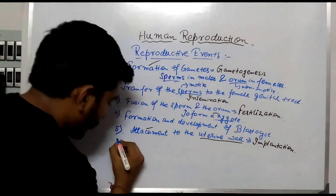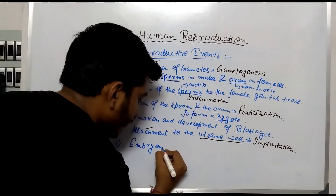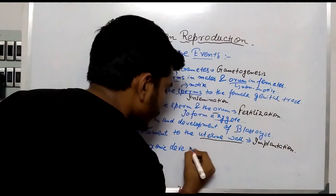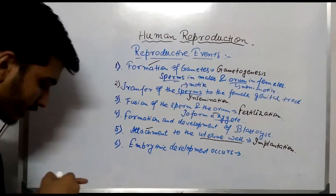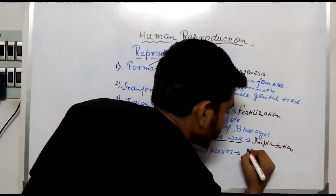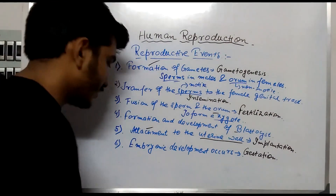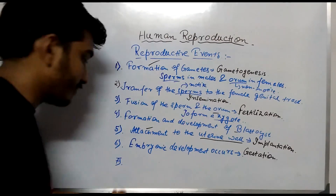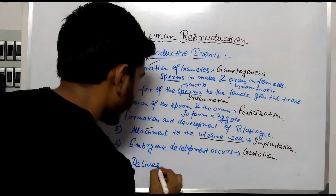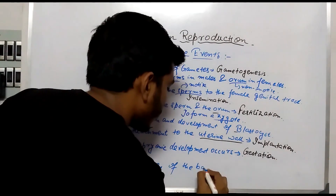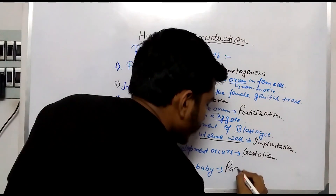After implantation, embryonic development occurs in the uterine wall. This process is known as gestation. We all know that in human beings the female has a gestation period of 9 months, which differs in various other animals. After embryonic development, finally the delivery of the baby occurs, and this process is known as parturition.